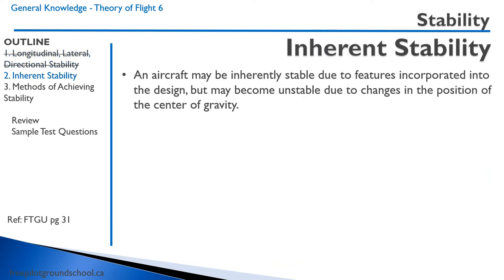Inherent stability is when an aircraft's design is such that it is inherently stable. When it is flown according to the flight manual, there are design features in the aircraft that make the airplane stable. However, it may become unstable if there are changes in the position of the center of gravity.